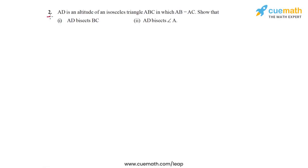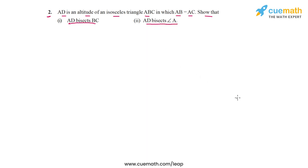In question 2, the problem statement says AD is an altitude of an isosceles triangle ABC in which AB is equal to AC. We have to show that AD bisects BC, and also show that AD bisects angle A.